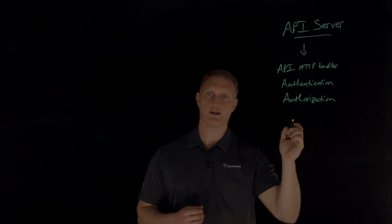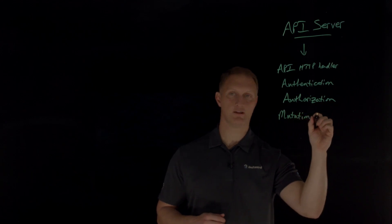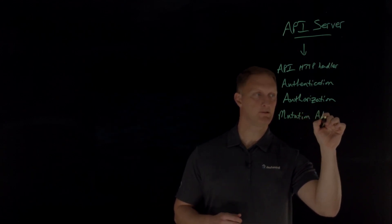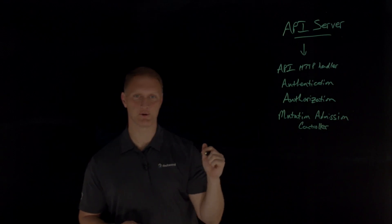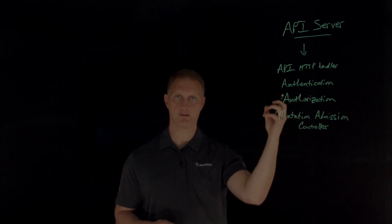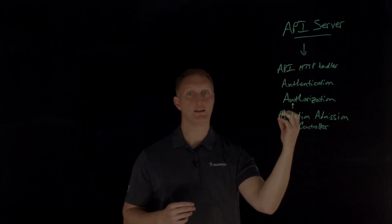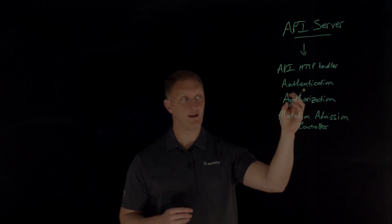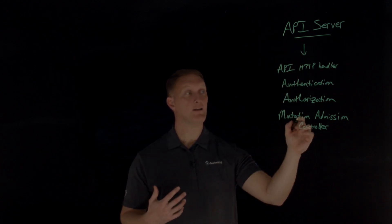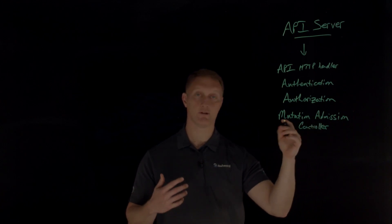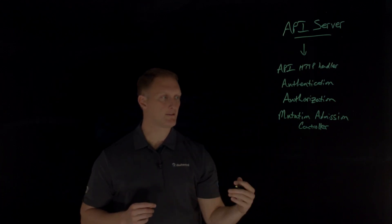Let's say you get through the authorization step. The next part is called the mutation admission controller. This is responsible for looking at the YAML file — remember the input to this API call is a YAML file. It's going to look at the YAML file and mutate it as needed. Maybe you've forgotten to include something, like a default value. The mutation admission controller is going to update or change the file so that it is a valid file for this Kubernetes cluster.